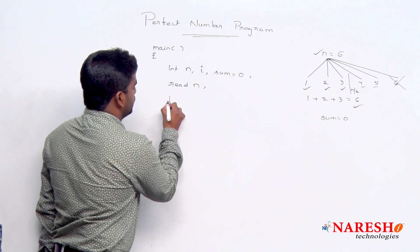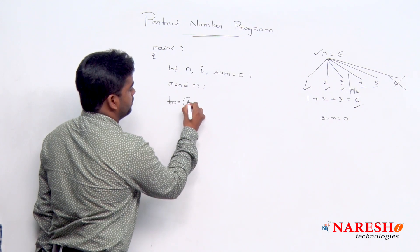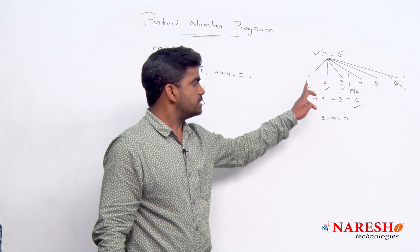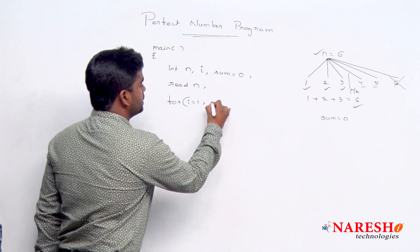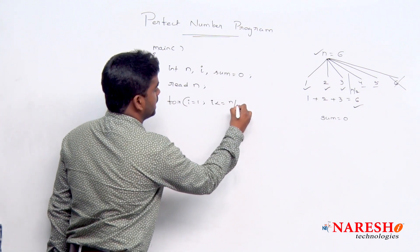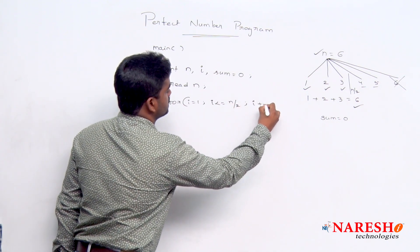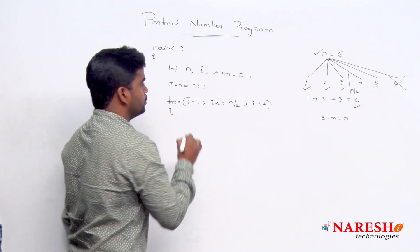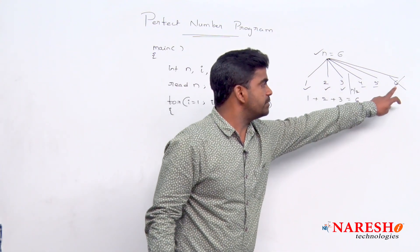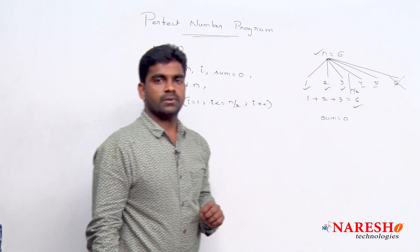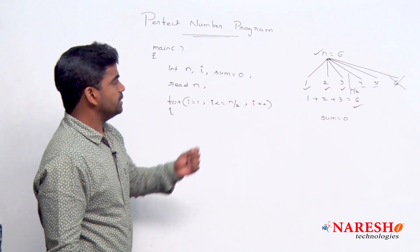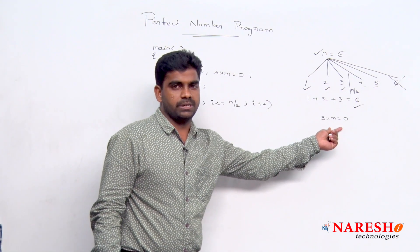Now we are repeating that loop. For i value starts with 1, and i is less than or equal to n by 2, and i plus plus, up to here we are repeating. And anyway, no need to check with itself. No need to check with itself.